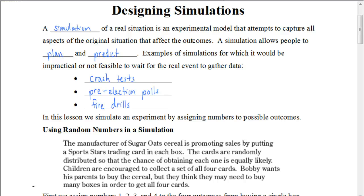Welcome. In this video, we're going to be looking at how to use what we've talked about so far in this chapter with probability to actually design simulations, where we would actually do some of the actual experiments. Now, it doesn't always make sense to actually do the actual experiment, so we're going to do what's called a simulation. A simulation of a real situation is an experimental model that attempts to capture all the aspects of the original situation that affect the outcomes. A simulation allows people to plan and predict examples of simulations for which it would be impractical or not feasible to wait for the real event to gather data.